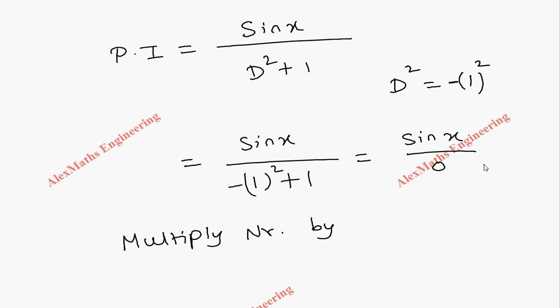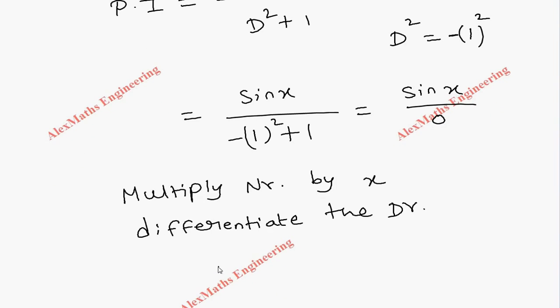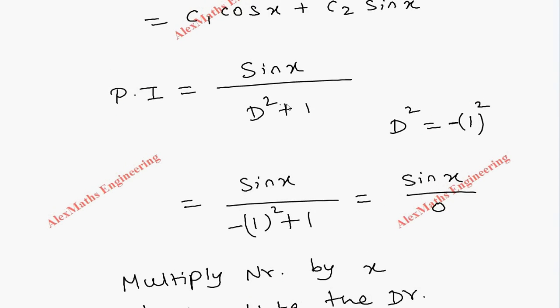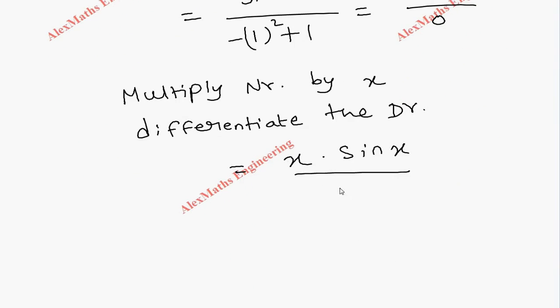So it becomes (x · sin x) / (differentiation of D² + 1, which is 2D). This simplifies to (x/2) · (1/D) · sin x, where 1/D stands for integration.